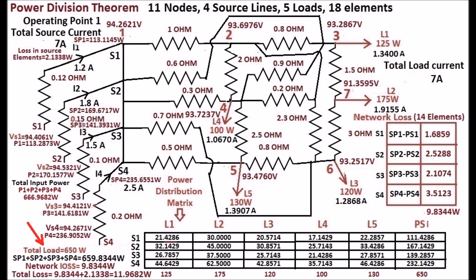The 4 source currents are 1.2 ampere, 1.8 ampere, 1.5 ampere, and 2.5 ampere. Currents are passing through the network and shared among the 5 loads.